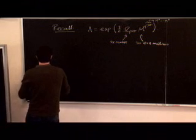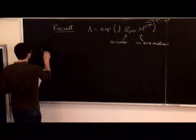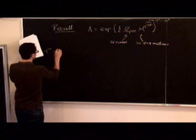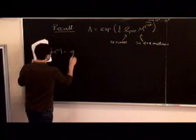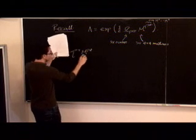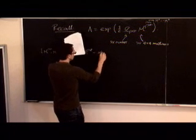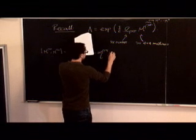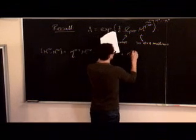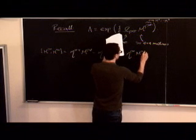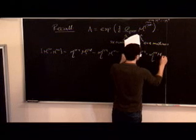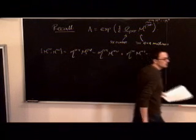The commutation relations are what we worked out in the last lecture, which followed just because we gave explicitly what these M matrices are. These are the commutation relations.